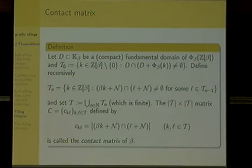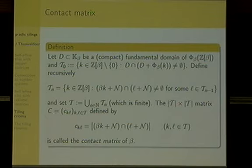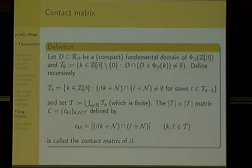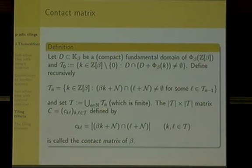I build up a matrix using this neighboring set T — a |T|×|T| matrix called C. The entries of this matrix say, roughly speaking, how many elements of a small copy of T+K are contained in T+L. This codes the graph-directed iterated function system that gives rise to the boundary. This characterizes the overlaps in the multiple tiling, and if we have a tiling, it characterizes the boundary. So we want to make this contact matrix small in some sense: we want the spectral radius smaller than the norm of the polynomial, and this turns out to be a criterion for tiling.